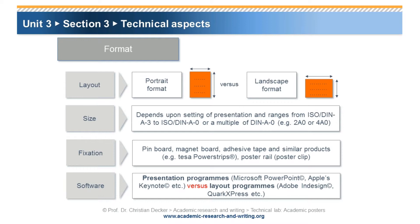The fixation of an academic poster at a conference can be done on a pin board, magnet board, with adhesive tape, or similar products. The software necessary to generate an academic poster can be a presentation program such as Microsoft PowerPoint, or a layout program such as Adobe InDesign.